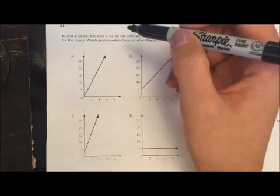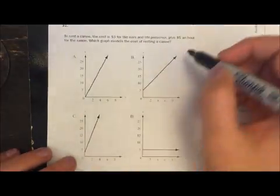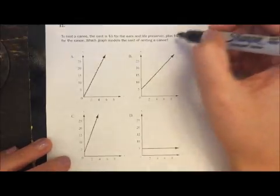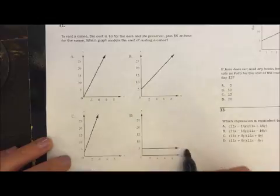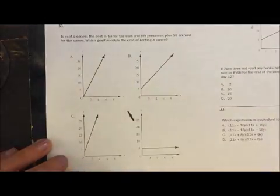And so it has a constant slope, right, and for every hour you're paying an additional five dollars. So this says you just pay five dollars and you can go as long as you want. So D would not be our option.